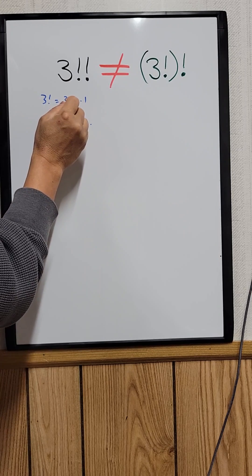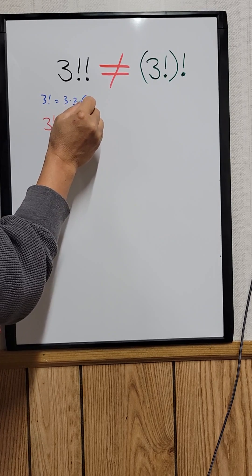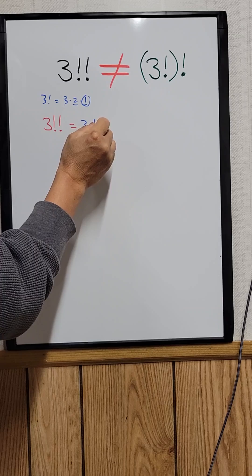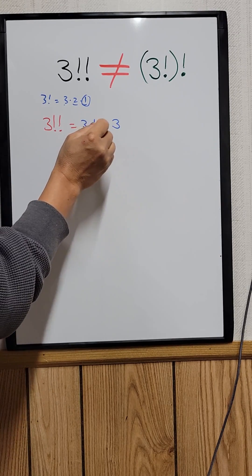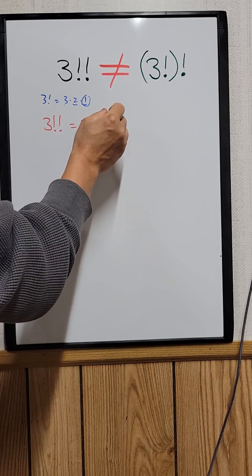and then for double factorial, you go down 2. So this is the next one you multiply with. So 3 double factorial is equal to 3. That's the answer right here.